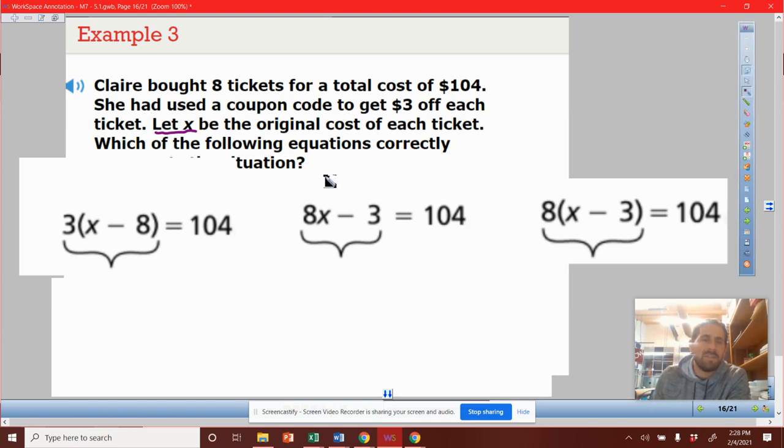So here, I'm looking at the one in the middle because it doesn't have parentheses. To me, that just seems like a good place to start. But this is eight times every ticket. So bought eight tickets, you multiply it by whatever the cost of the ticket is,